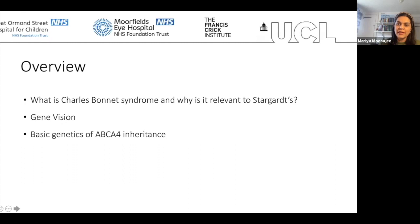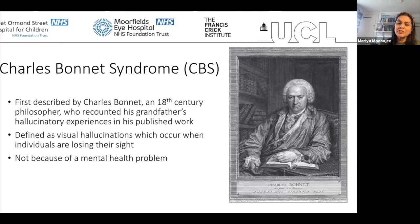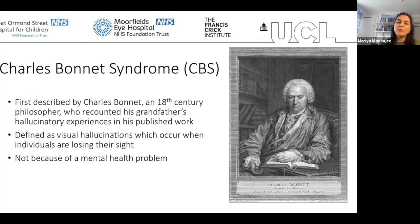Charles Bonnet syndrome was first described by an 18th-century philosopher called Charles Bonnet, who recounted his grandfather's hallucinatory experiences in his published work. It is defined as visual hallucinations that occur when individuals are losing their sight — related to the brain not receiving signals from the retina and responding to that loss by generating visual images. This is not because of any form of mental health problem, and that's really important to emphasize.